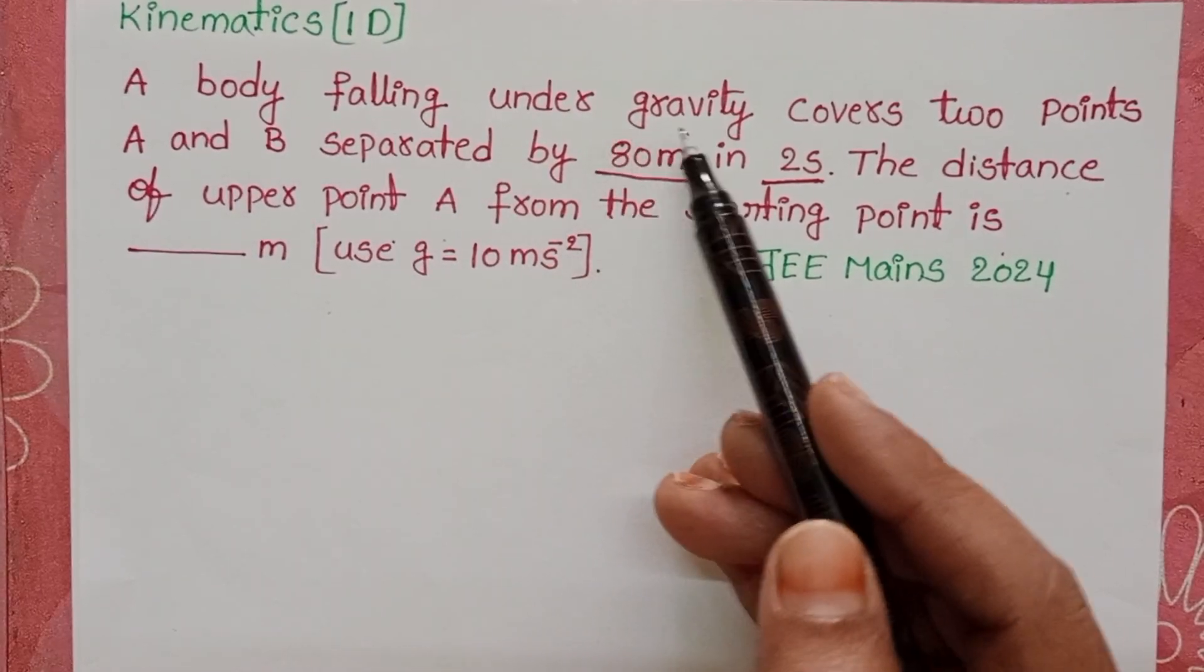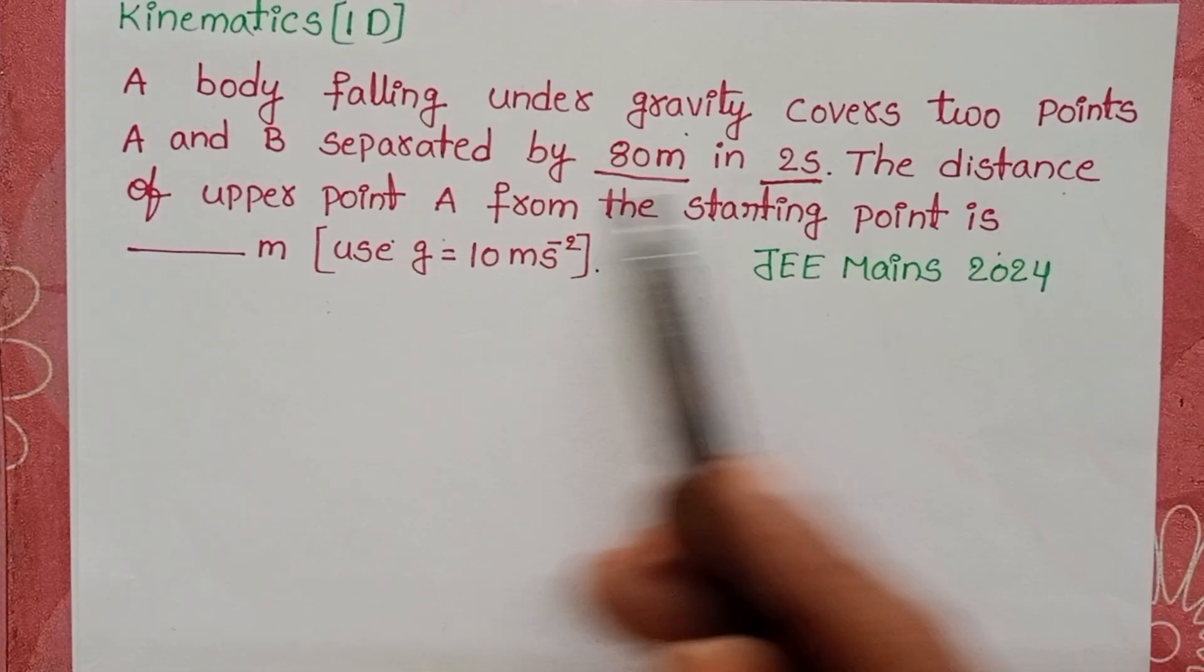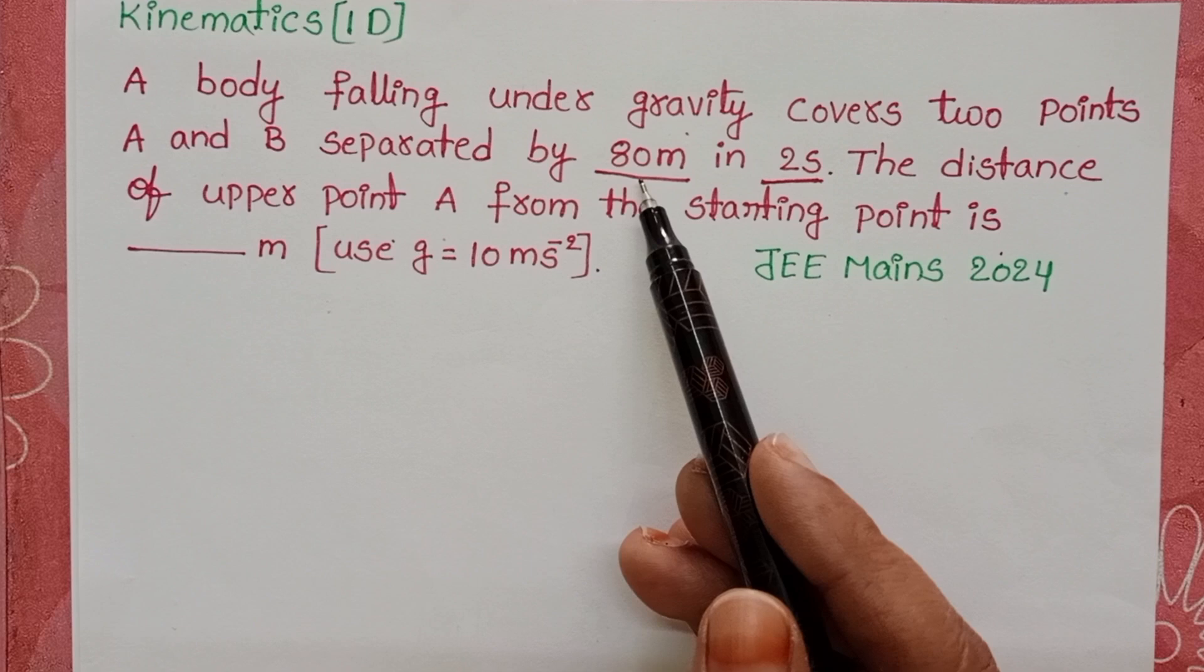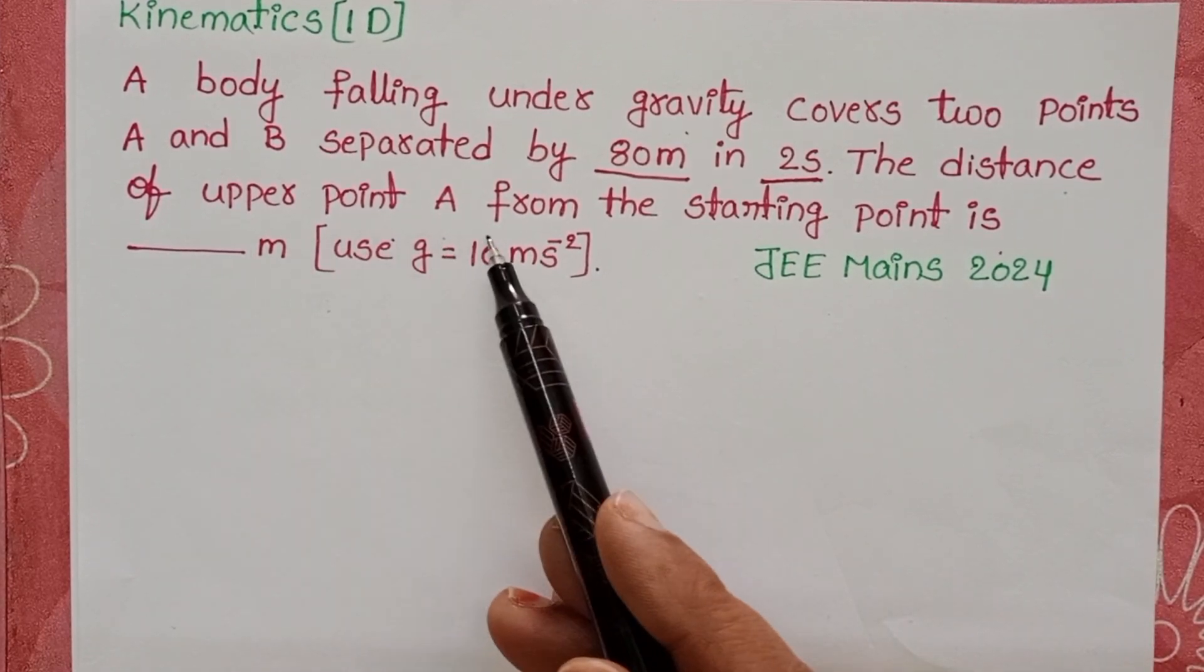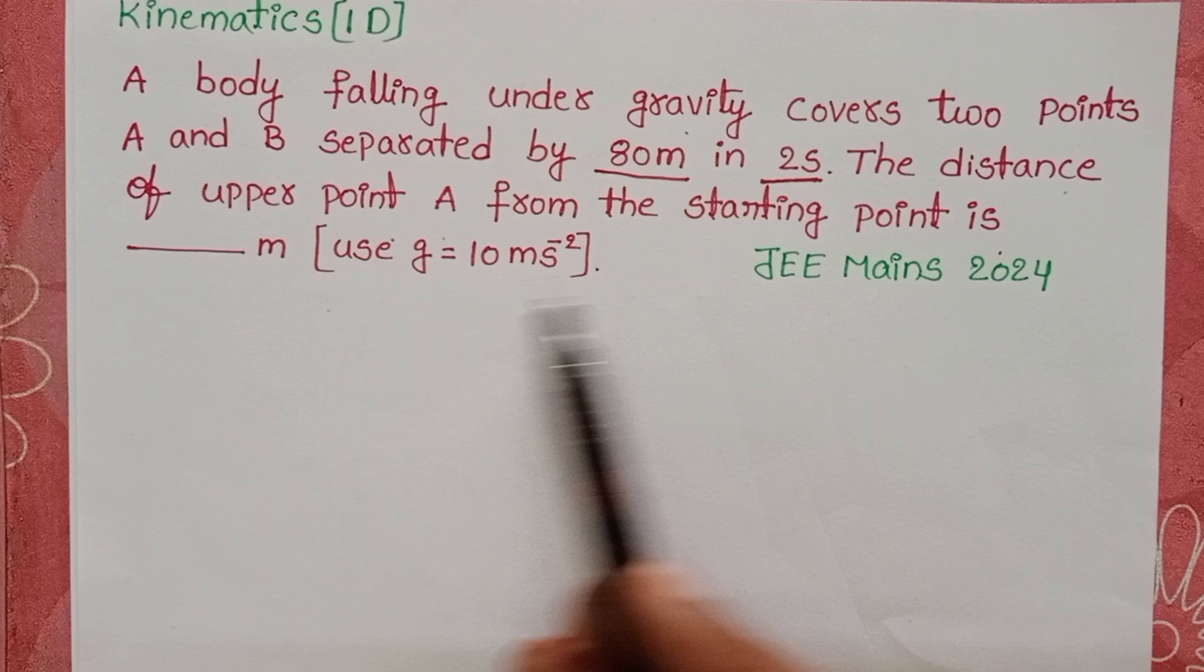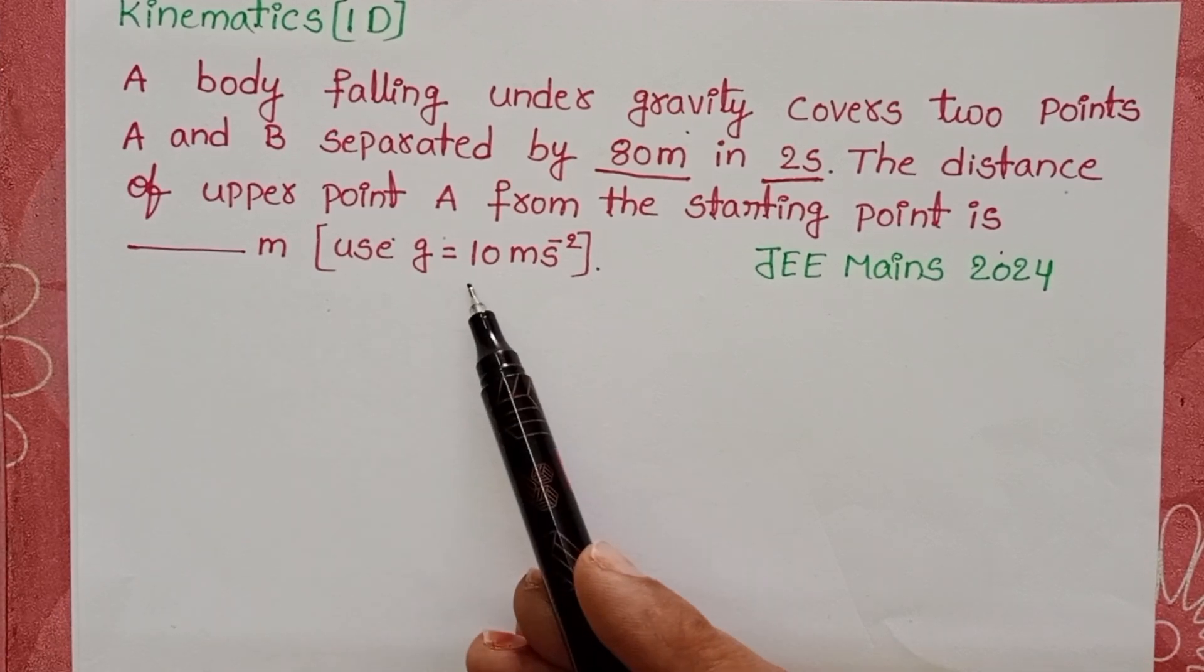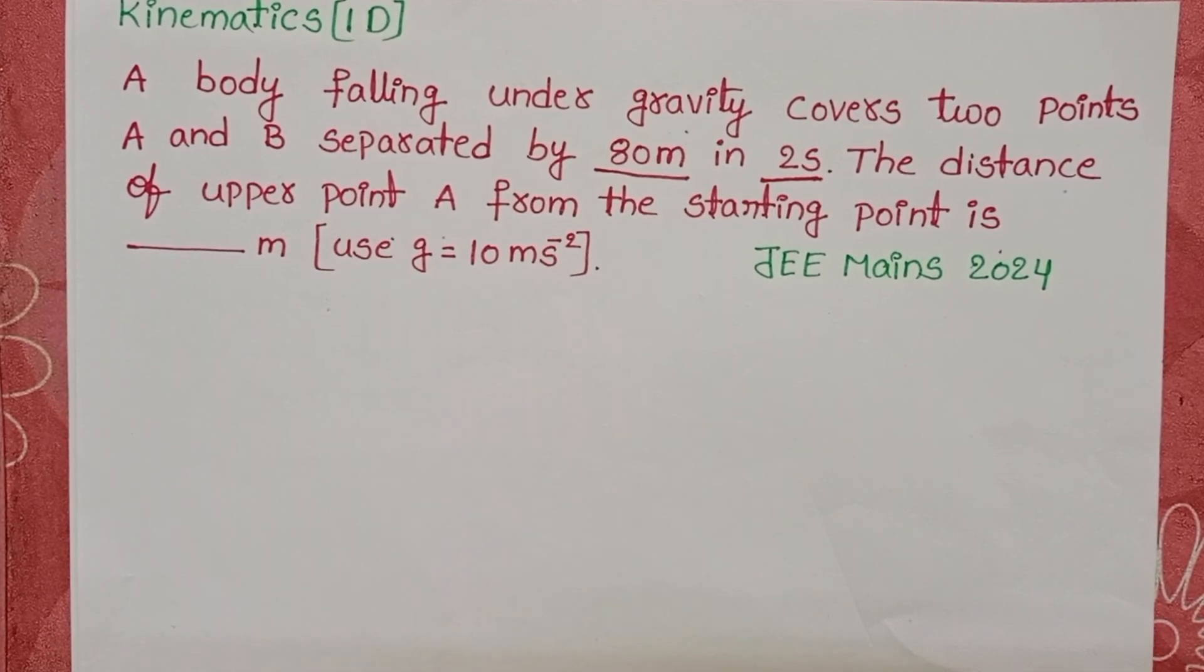A body falling under gravity covers two points A and B separated by 80 meters in 2 seconds. The distance of upper point A from the starting point is dash meters. Take G value is 10 meter per second squared.